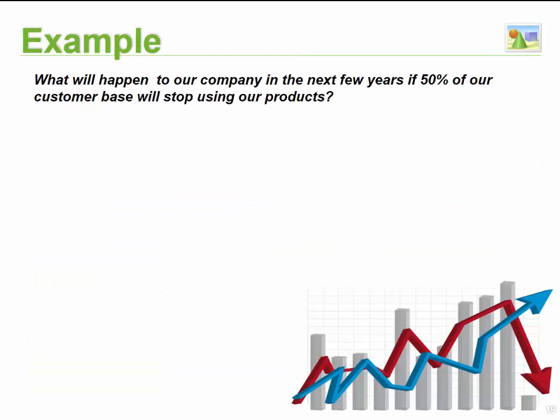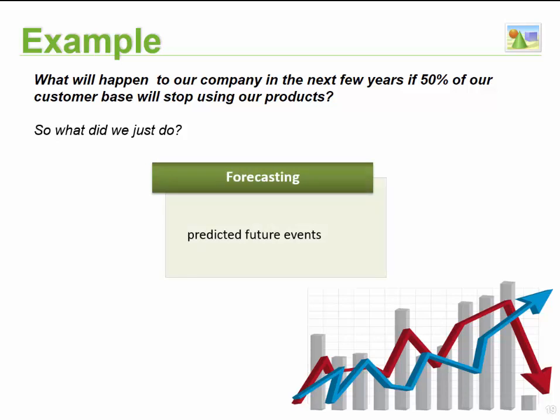In the next section, consider this question: you have a company — what will happen within the next few years if fifty percent of your customer base stops using your products? Within two years, if half your customers disappear, your company will fail. What we've done here is made a forecast. Forecasts allow us to predict future events. Thinking back to our earlier discussion: data turns into information, which allows us to obtain knowledge, and from knowledge we can start to do forecasts and predict future events.